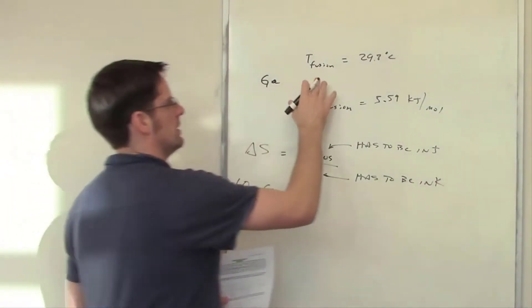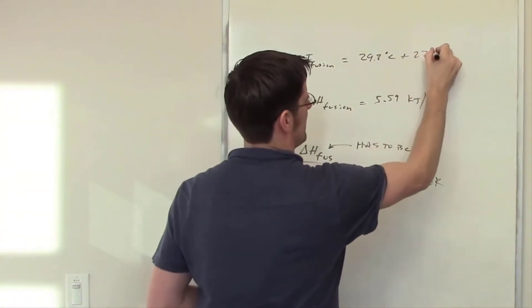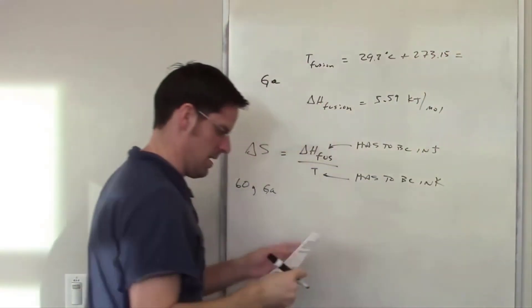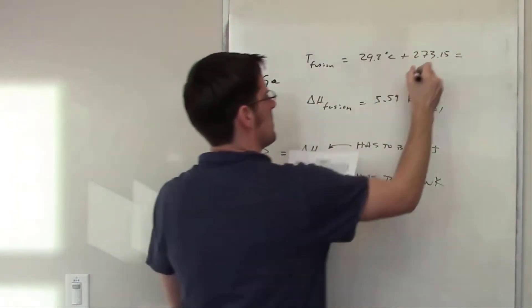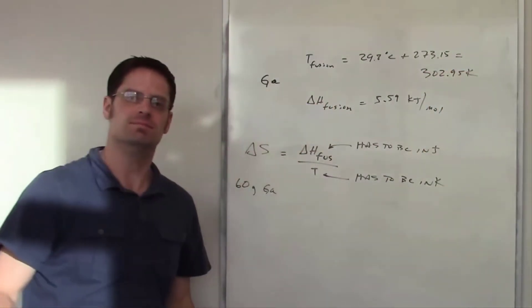So our temperature of fusion is 29.8. I add 273.15 to that and that will give me how many kelvins that is, and that comes out to be 302.95 kelvins.